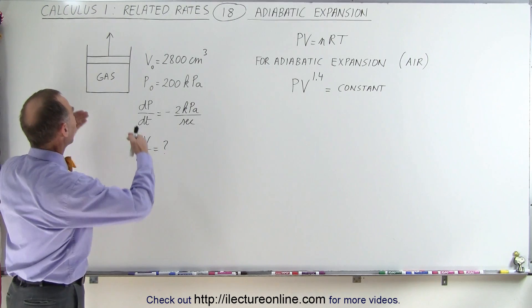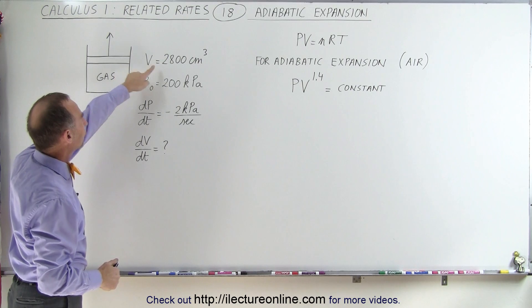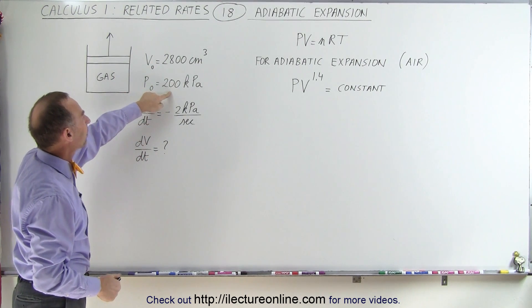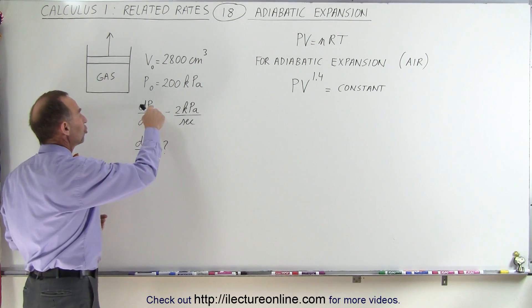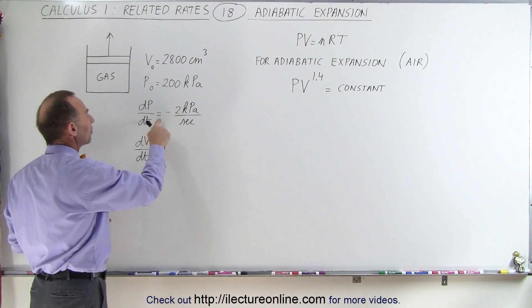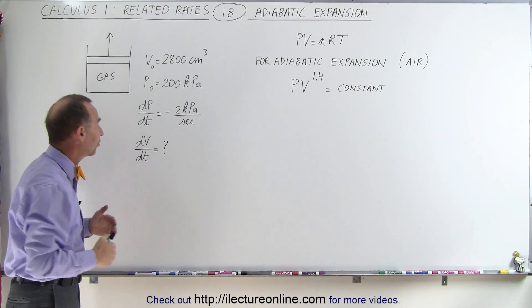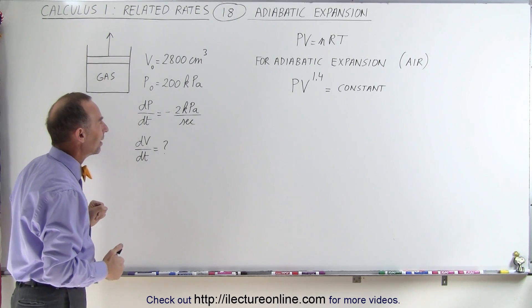Here we have a gas that is expanded through some process. If we have the initial volume of 2800 cubic centimeters and initial pressure of 200 kilopascals, and because of the expansion the change in the pressure per unit time is changing at a rate of minus 2 kilopascals per second since the pressure is decreasing, what will be the change in the volume per unit time at that time?